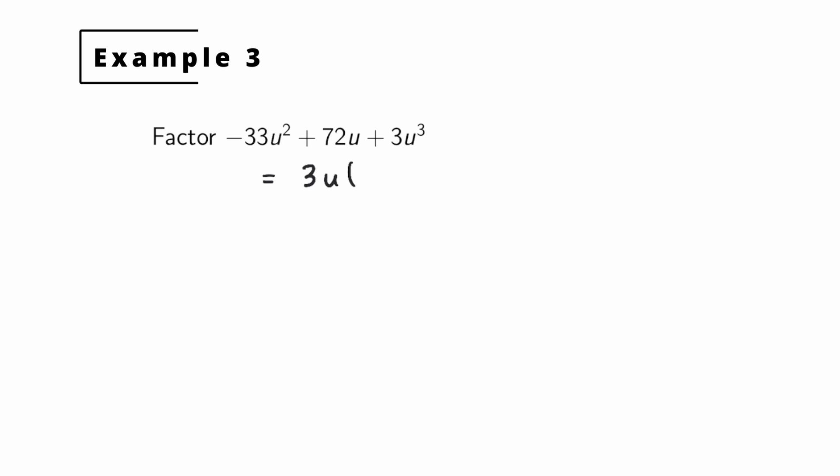If we do that what will we have left over? Well for the first term we will have -11u left over. For the second term, 72 divided by 3 is 24, so we'll have just 24 there. And for the last term we factor out the 3u, we'll have just u².